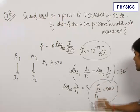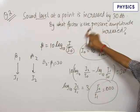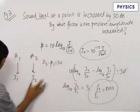Now, we have got the ratio of the intensities and we need to find out the ratio of the final pressure amplitudes. For this we have a formula.